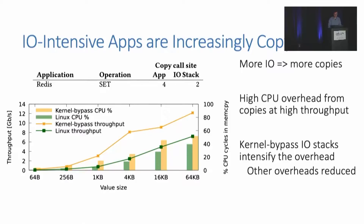So why is this a problem? Copying data around can get expensive, and the faster we can do I/O, the more copies we're going to have to do. To show this, we run a single-threaded Redis server with a Linux and kernel bypass I/O stacks, and a client running only set requests, which have a total of six copies per request, as you can see in the table.